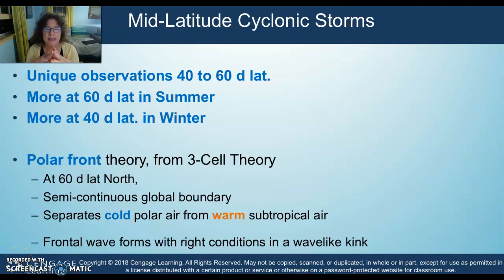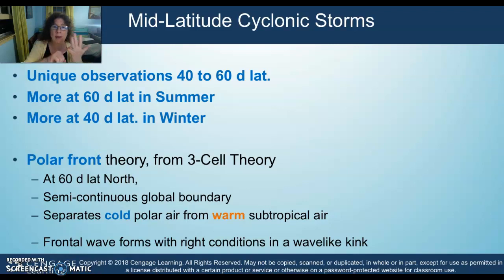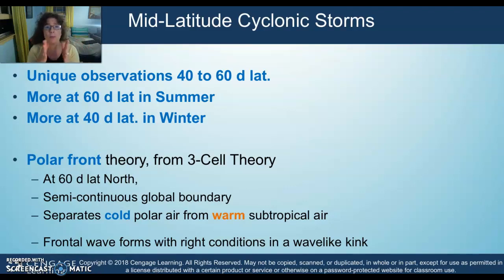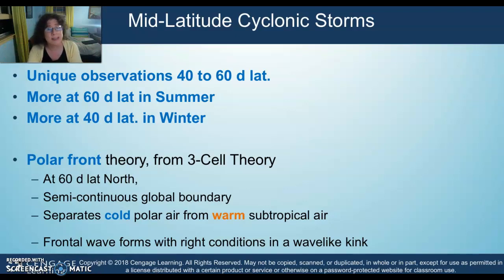What differentiates occluded storms from cyclonic storms? The answer lies in the later part of the Polar Front Theory, also called the Bergen School Theory from Bergen, Norway. This theory progresses from air masses to stationary fronts, cold fronts, warm fronts, and occluded fronts. Now we're getting into Polar Front Theory for cyclonic storms, which is what they were really researching. It represents modern meteorology, starting about a hundred years ago.